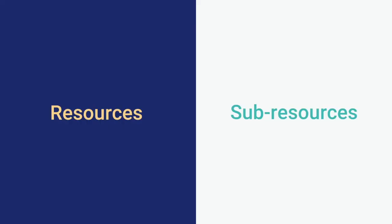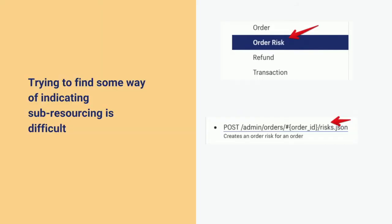Sub-resourcing. The whole issue of sub-resourcing in an API — in our API, we have the concept of parent resources and child resources. So if you'd like to access the risk resource, you can do so as a child of the order resource. The convention we used in our documentation was to use a space, so it's easy to see that there is such a thing as an order and such a thing as a risk, and I can access this risk at an order.